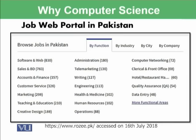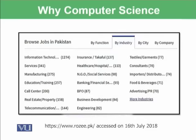Now let's explore jobs by industry within the same portal. You can see that 1,274 jobs are available for information technology. Call center has 200 jobs available, and telecommunications has 144 jobs. Other areas have very limited job offerings, but information technology and computer science have the maximum number of jobs available nowadays.